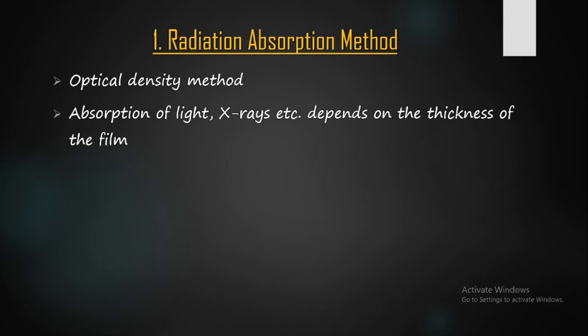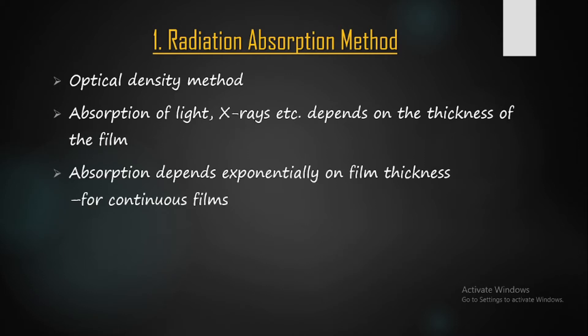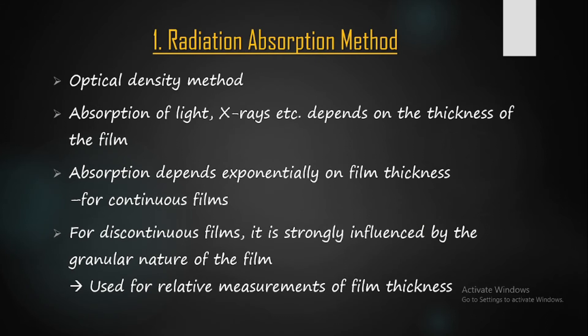The absorption of light depends on the thickness of the film. The thickness dependence of absorption of light, X-rays, alpha rays, and beta rays may be utilized to determine the thickness and thickness distribution of a film. Absorption depends exponentially on film thickness — several works have verified this exponential dependence for continuous films. In discontinuous films, absorption is strongly influenced by the granular nature of the films.